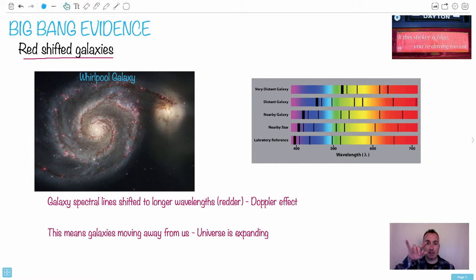So the Whirlpool Galaxy, if we did a spectrum, we take the light from this, put it through a prism, we can actually break it down into its components. We can spot some different elements that we recognize. But the problem is, these elements will actually be shifted. So this is an example here.